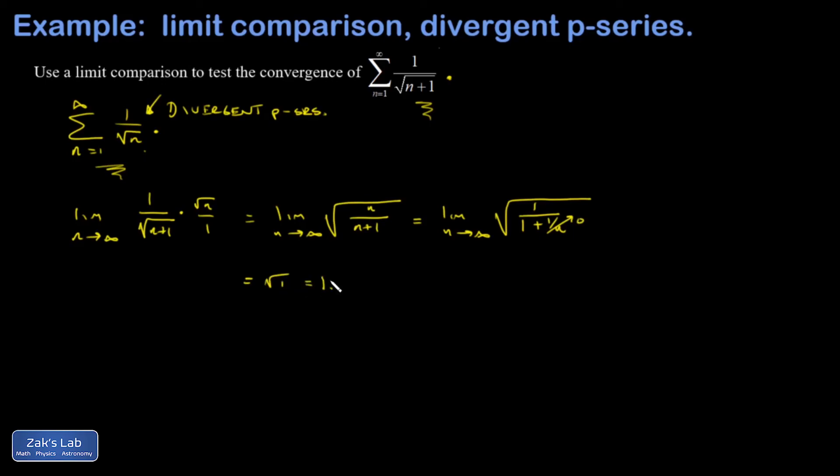So because we settled down to a finite limit, both of these series are going to have the same convergence behavior. In other words, they both diverge.